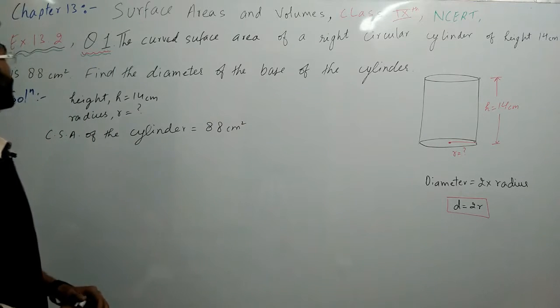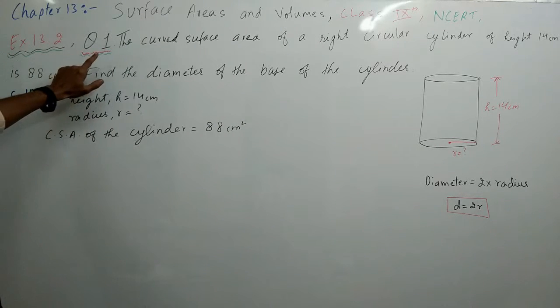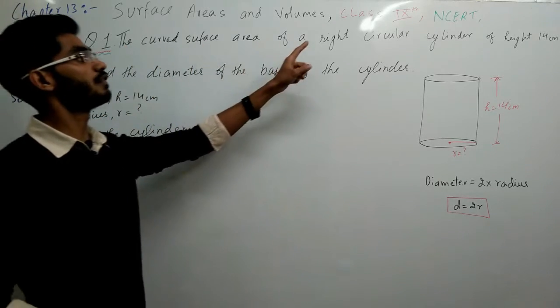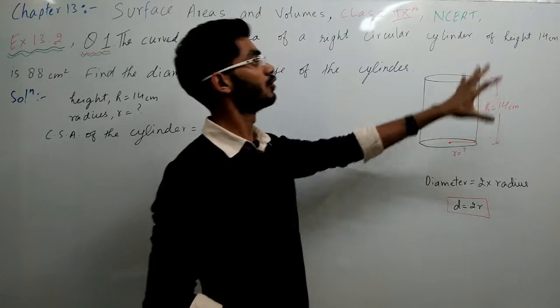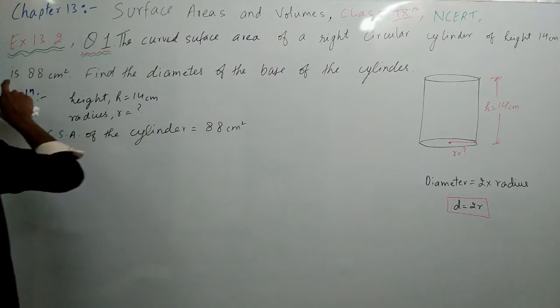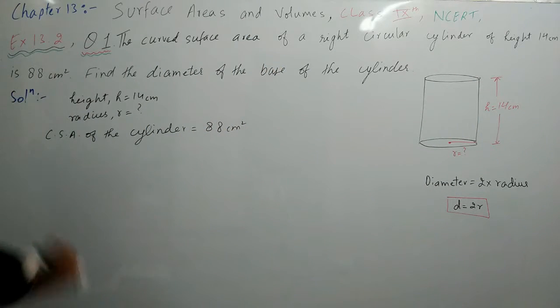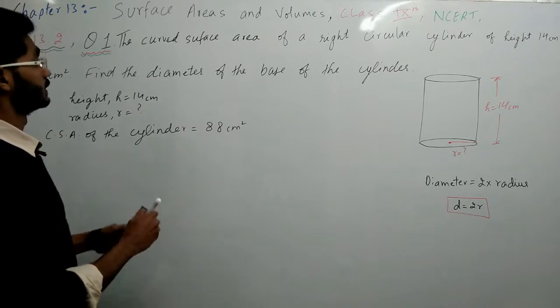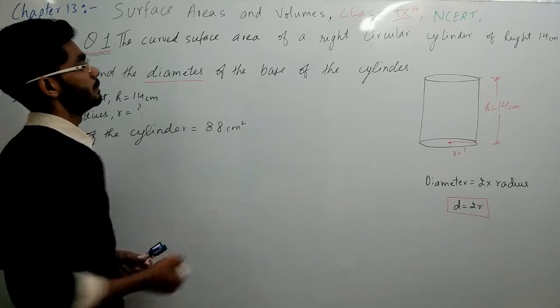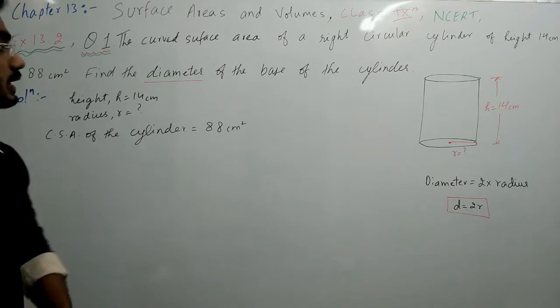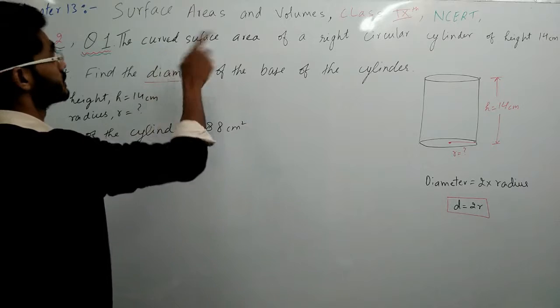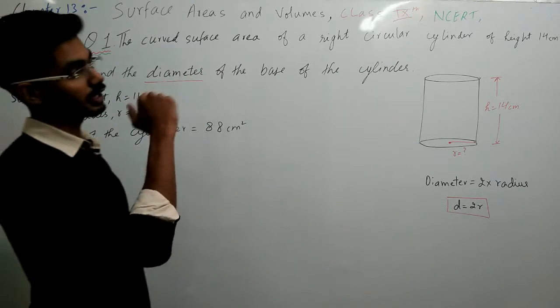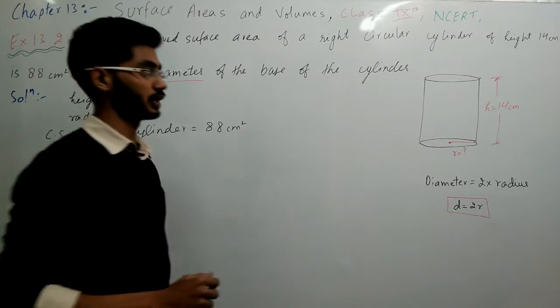So we are going to start the very first question of this exercise and that is: the curved surface area of a right circular cylinder of height 14 centimeter is 88 centimeter square. Find the diameter of the base of the cylinder. This is the curved surface area. How much is it? 88 centimeter square and height is 14 centimeter.